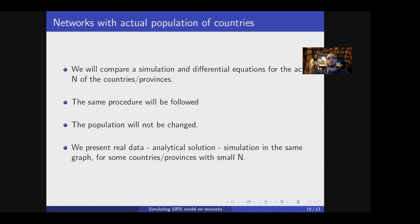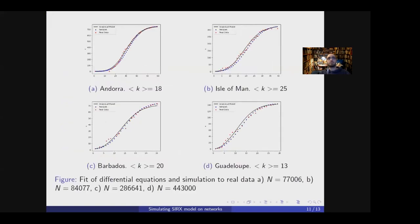We want to compare simulation and differential equations for actual countries or provinces. We follow the same procedure but without lowering N. We follow this procedure for relatively small countries, the biggest being Guadalupe with around half a million nodes population. We can see that the fit of X of the simulation — blue dots — and X of the differential equations — black line — is good to the real data — the red dots.